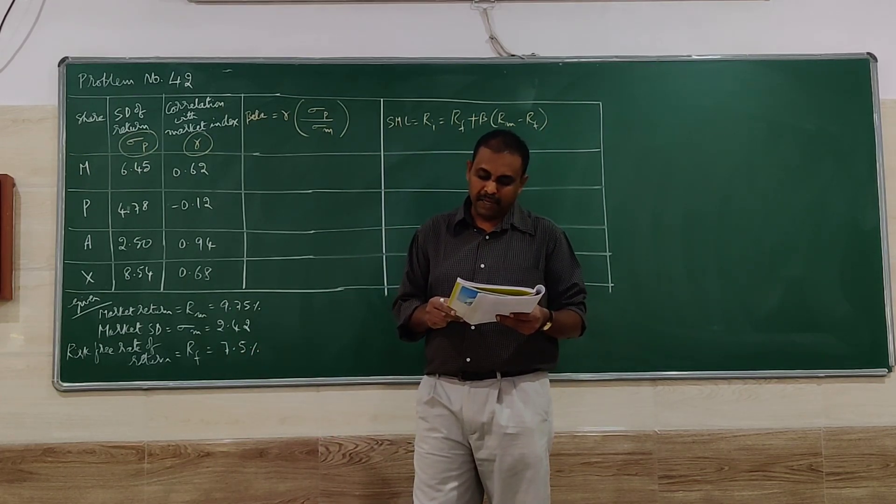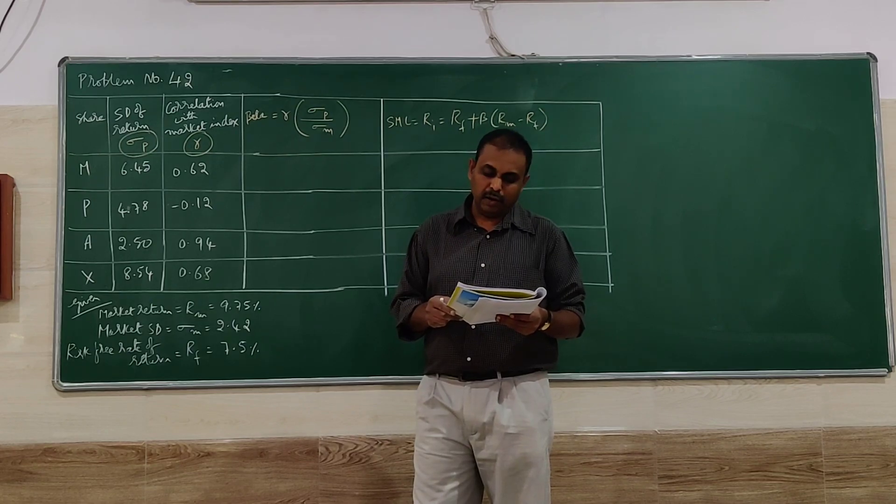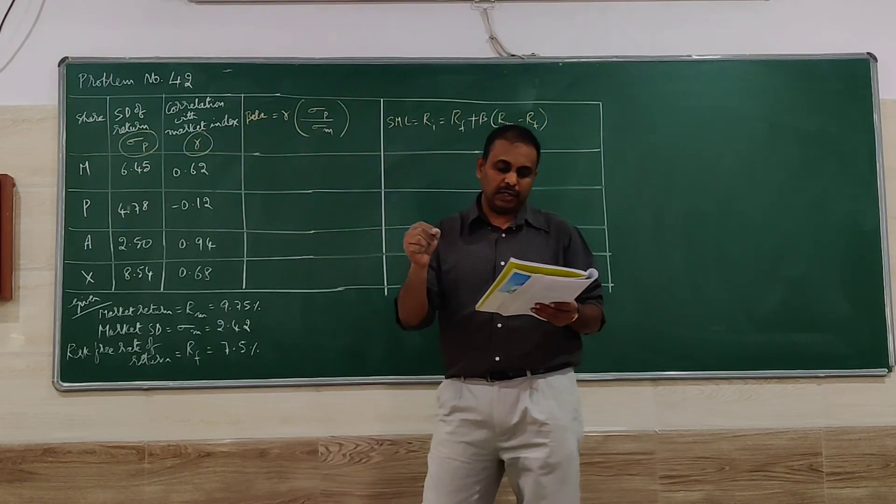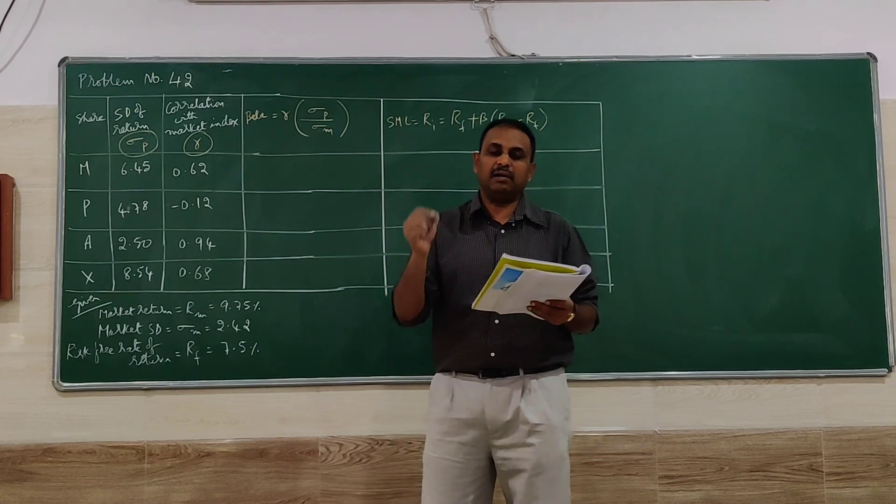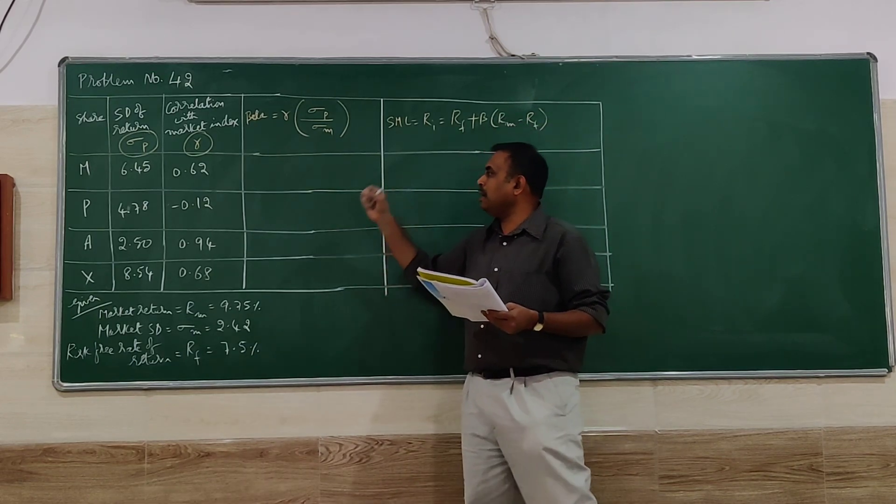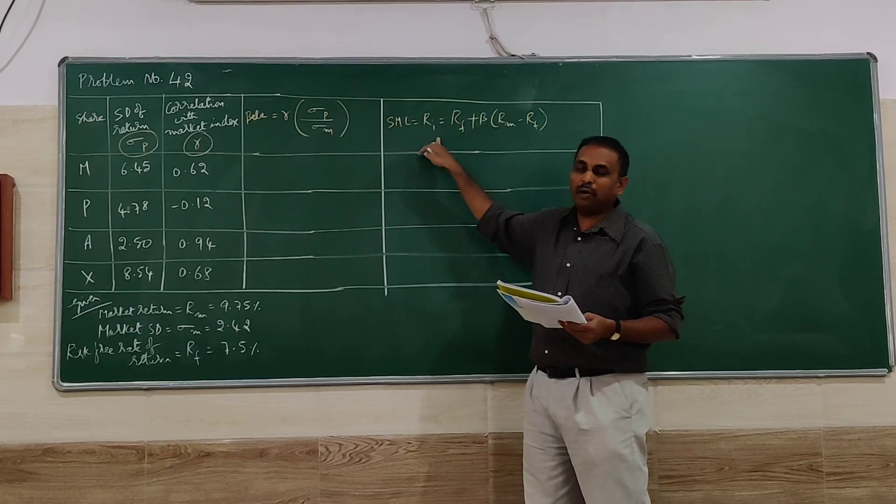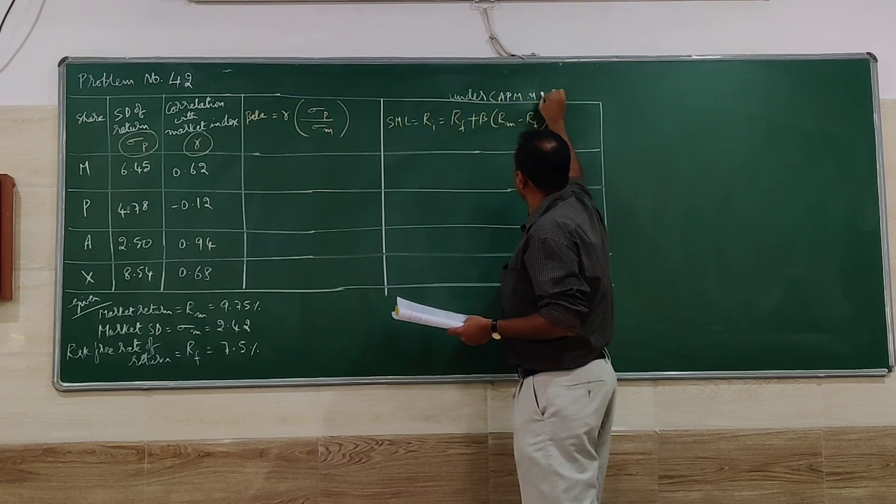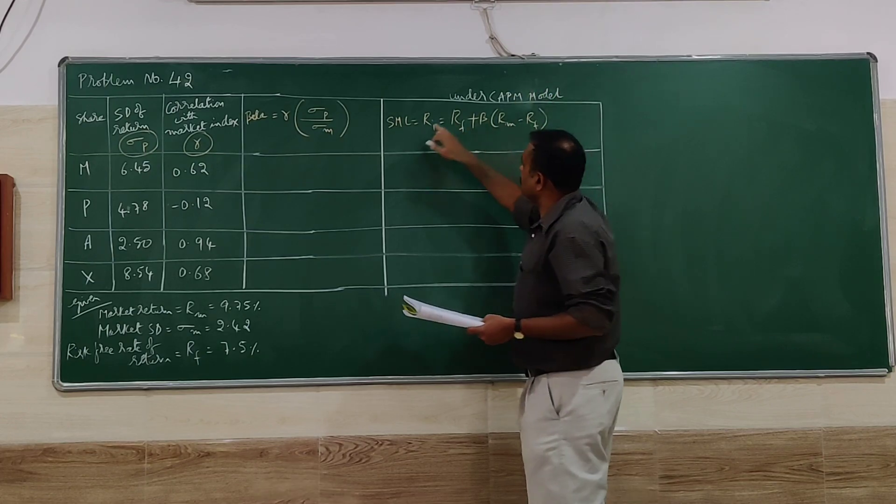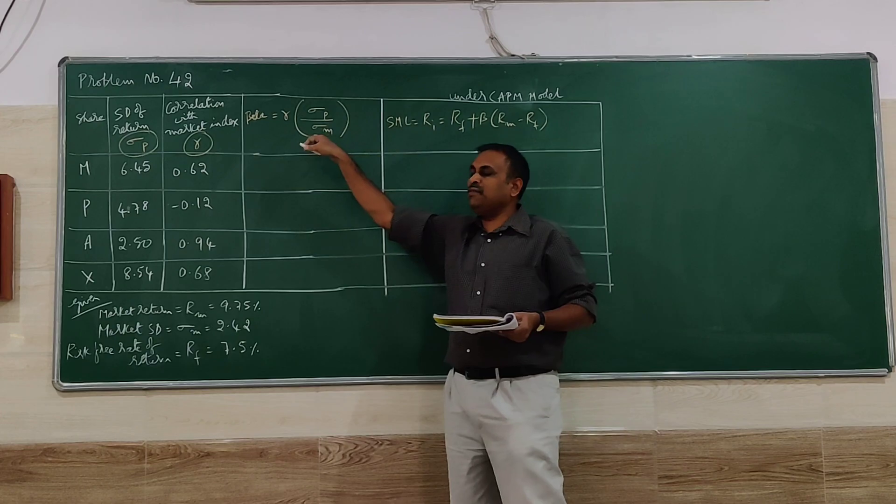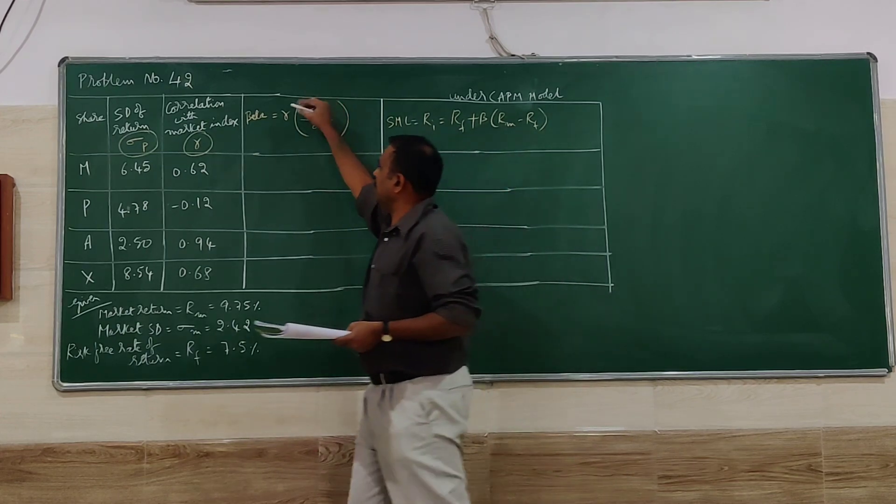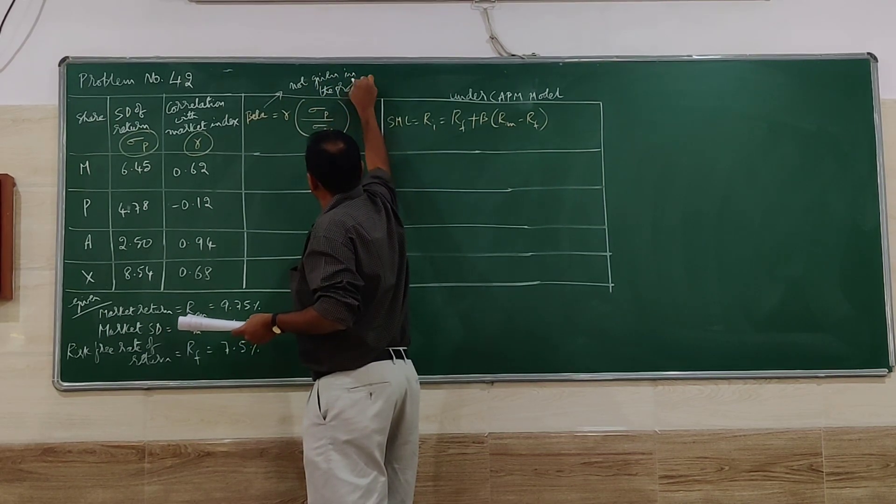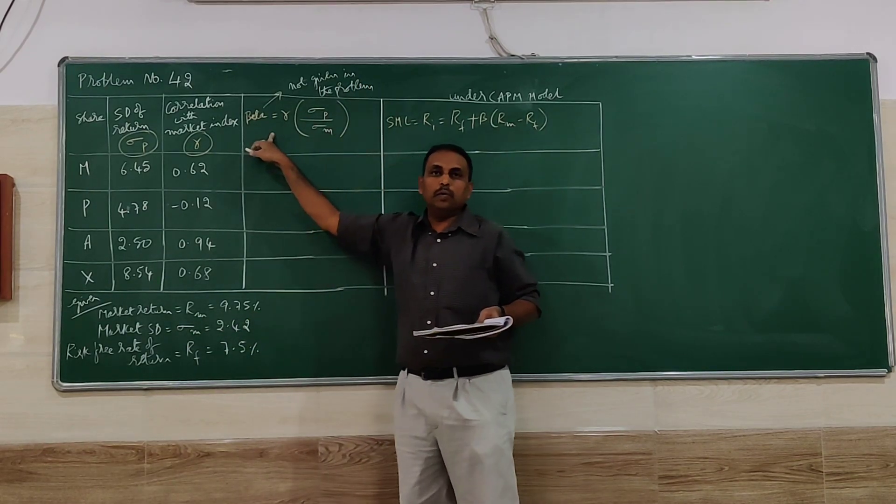Based on beta, comment on the volatility of each stock. First we have to calculate beta coefficient and expected rate of return from each share. When we have to find each share return, we have to go for security market line under CAPM model. To find RI we need beta. Beta is not given in the problem.